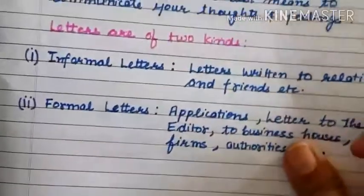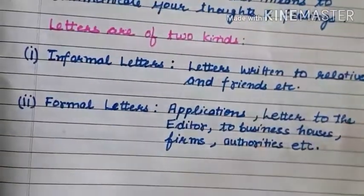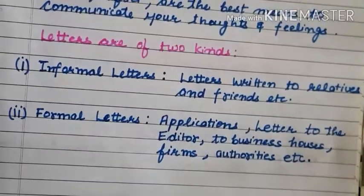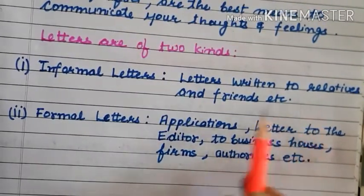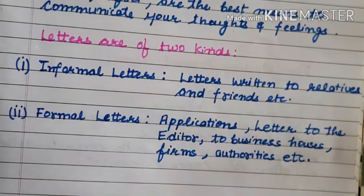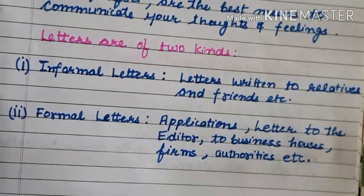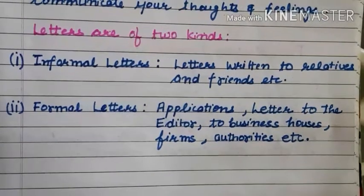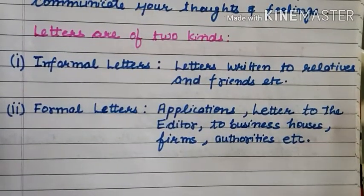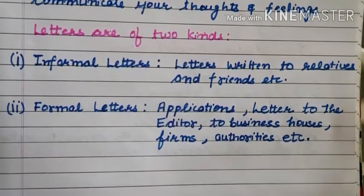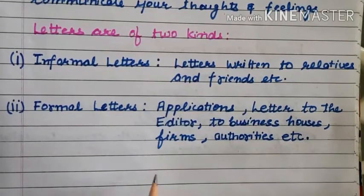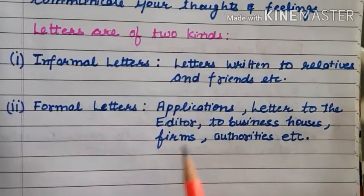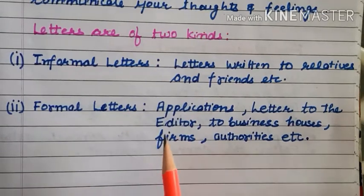There are two types of letters. One is informal letters, which we write to relatives and friends — people who are close to us. And the other type is formal letters, which we write to people we don't know closely, which is formal.